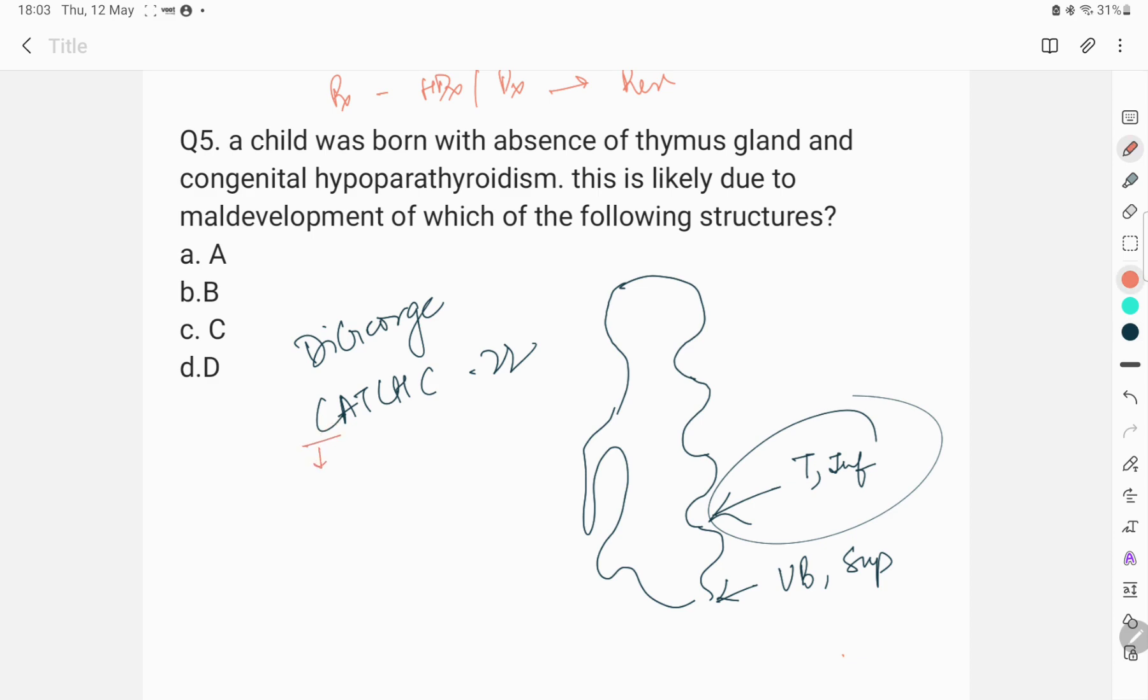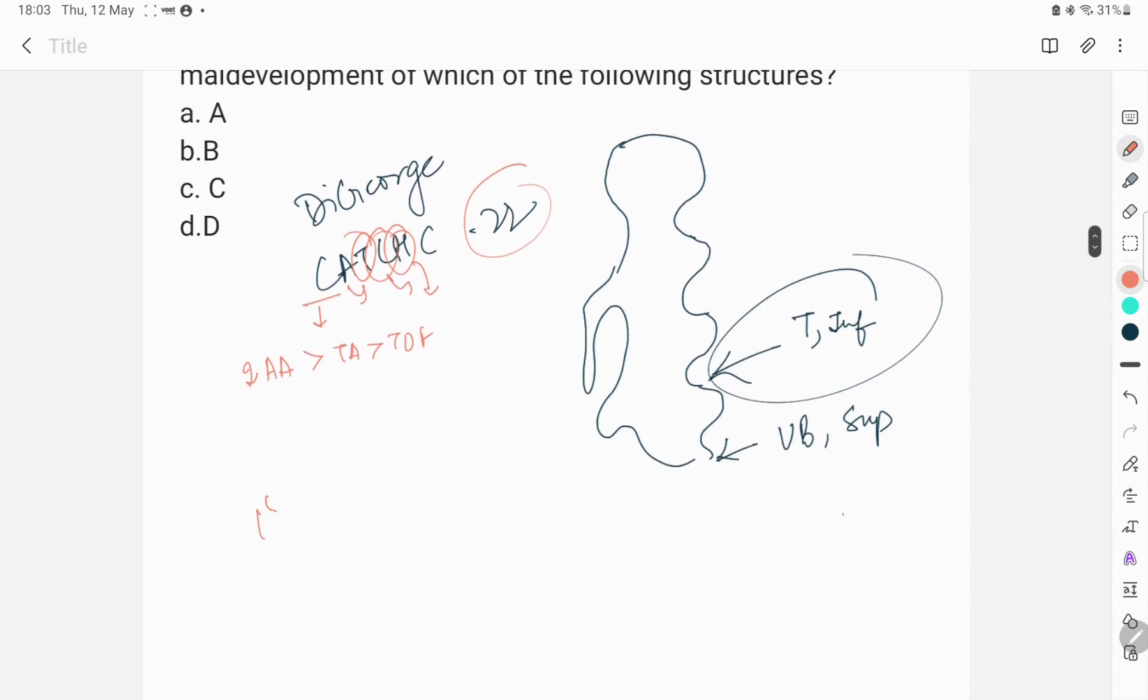CATCH-22 is the mnemonic. C is for cardiac defect. The most important cardiac defect that is seen in DiGeorge syndrome is interrupted aortic arch syndrome. The second most common is truncus arteriosus followed by TOF. A is for abnormal facies. T is for thymic hypoplasia that leads to T cell defects. C is again for cleft palate. H is for hypocalcemia. 2 is for the chromosome number 22. The first sign that is seen in these patients is refractory neonatal hypocalcemia.